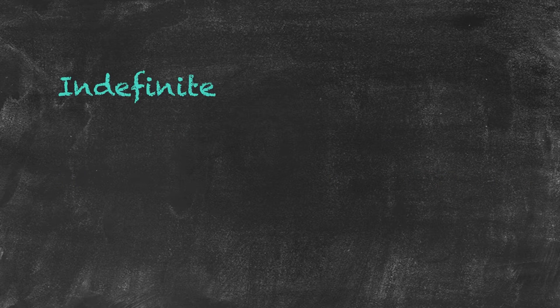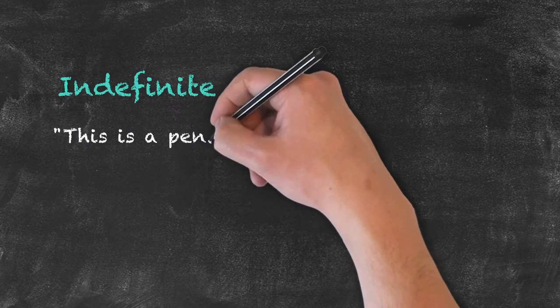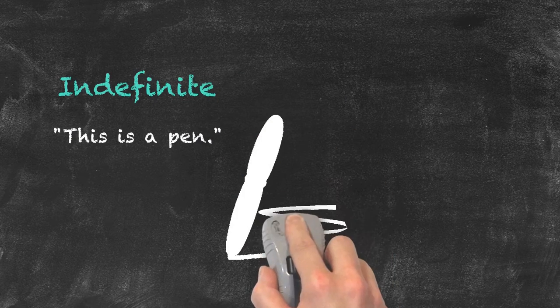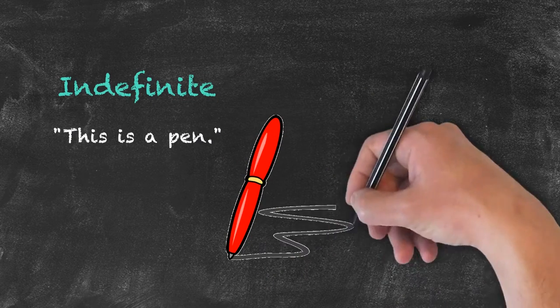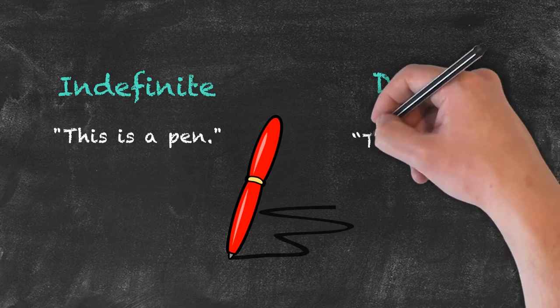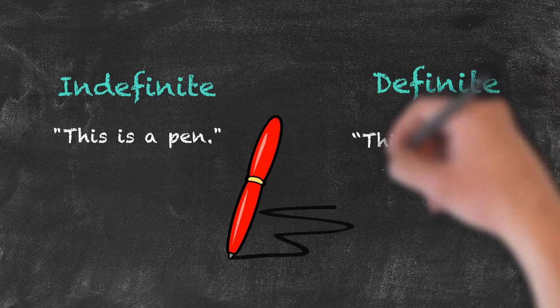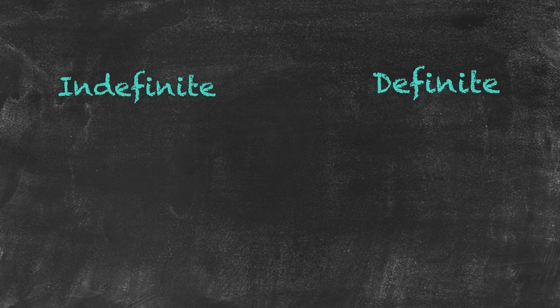With the indefinite article, we use it in a nonspecific way. For example: 'This is a pen.' It's one of many pens. When using the definite article, we use it in a specific way: 'This is the pen I'm using.'